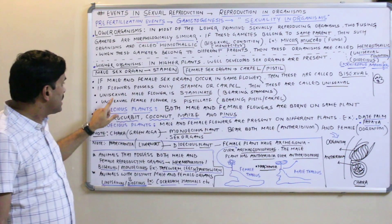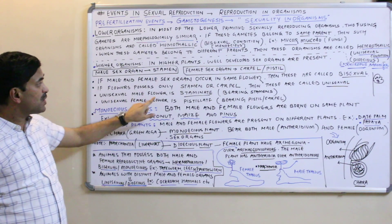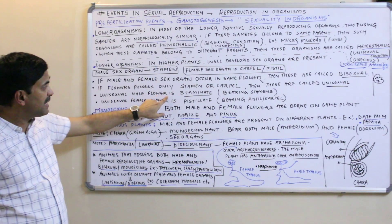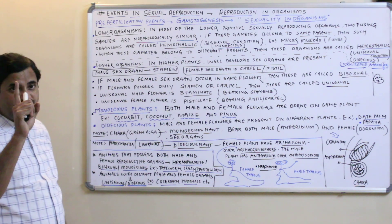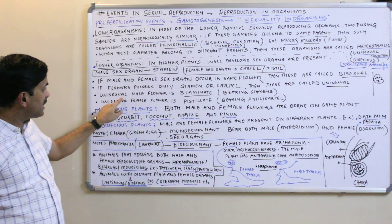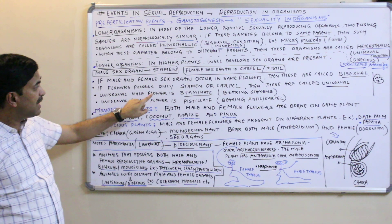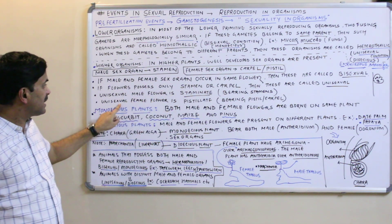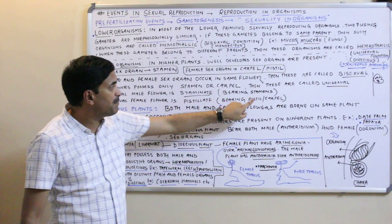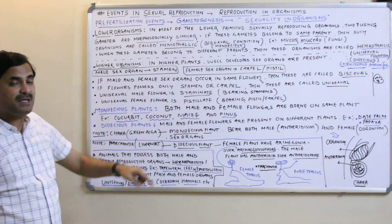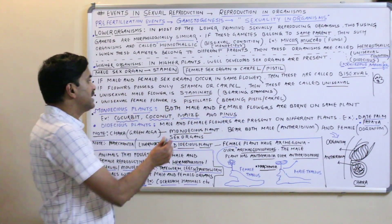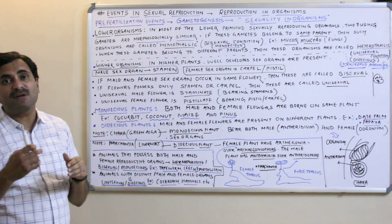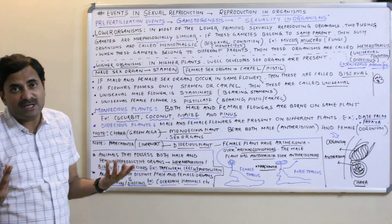A unisexual flower bearing the stamen is called a staminate flower. A unisexual flower bearing the pistil or carpel is called a pistillate flower. So a staminate flower is a unisexual flower which bears the stamen, and a pistillate flower is a unisexual flower which bears the pistil.